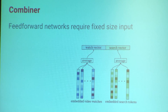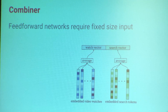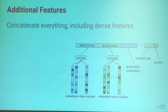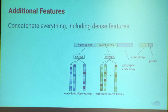The next step is the combiner. Traditional feed-forward networks require a fixed-size input, but the number of watches and search tokens can vary dramatically between users, so we need to summarize those into a fixed-size input. In practice, whether it's averaging, summing, or component-wise max, it's not too important — in high enough dimensions you don't lose much information. This is not the optimal way to represent a temporal sequence; there's interesting research around recurrent networks for that. The nice thing about this framework is you can add additional features: embedding of the user's geography, example age, gender. You just concatenate all these continuous and embedded features, giving nice priors so that without user history you regress to popular content in a region, demographic, device, or time of day — and as the user watches, it becomes more personalized.